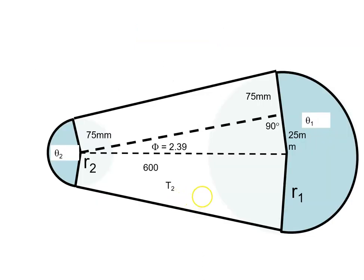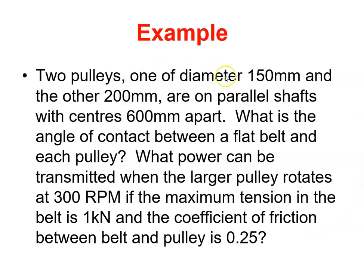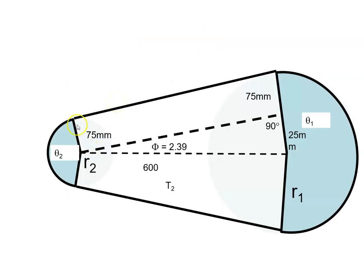The first thing we're going to do is draw it out. We're told one of the pulleys has a diameter of 150mm and the other is 200mm. So that means the radius is 75mm and the radius here is 100mm. And the centers from here to here are 600mm apart.